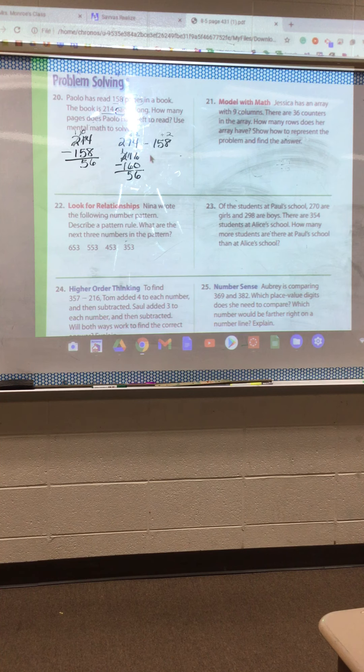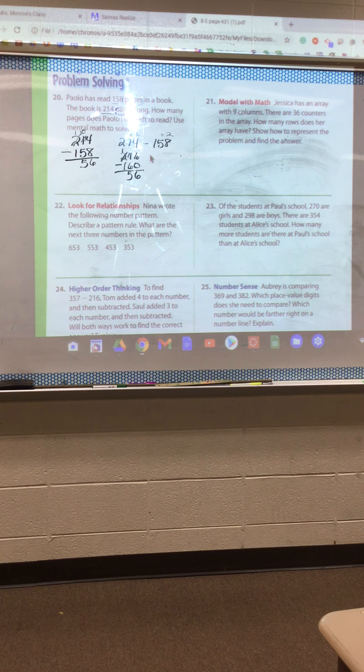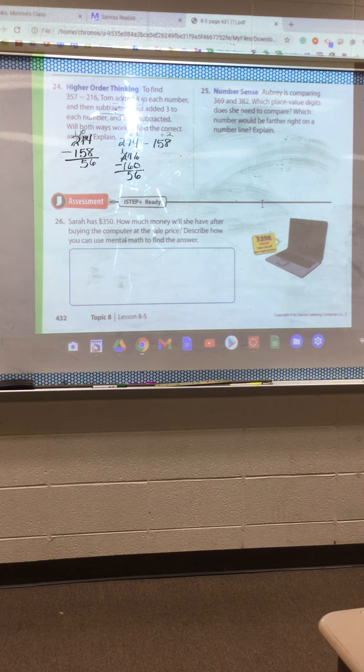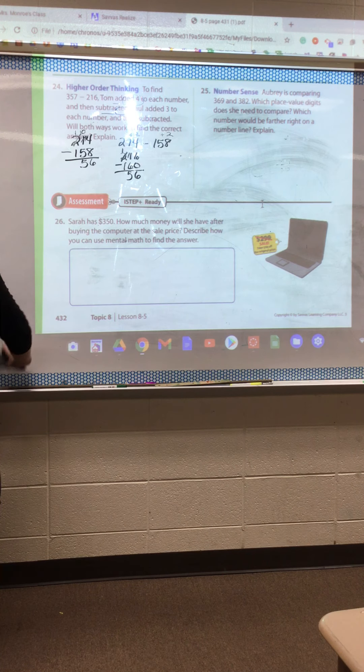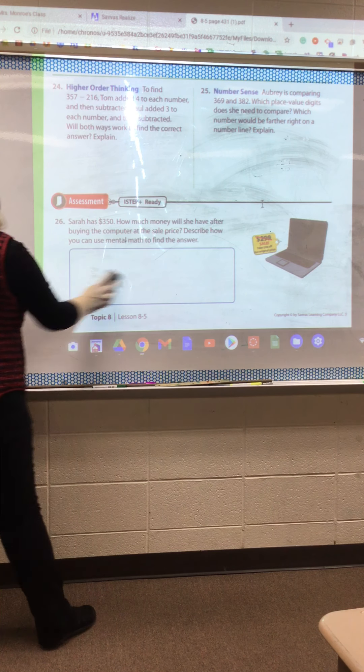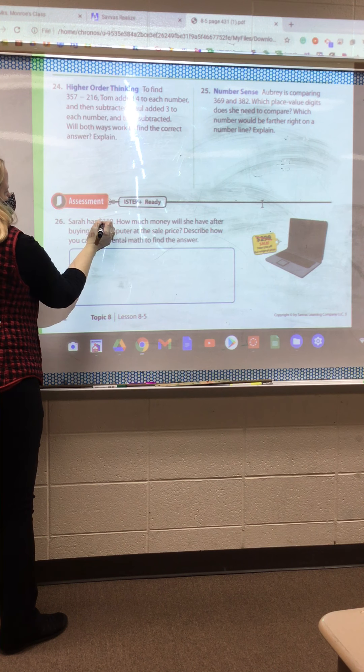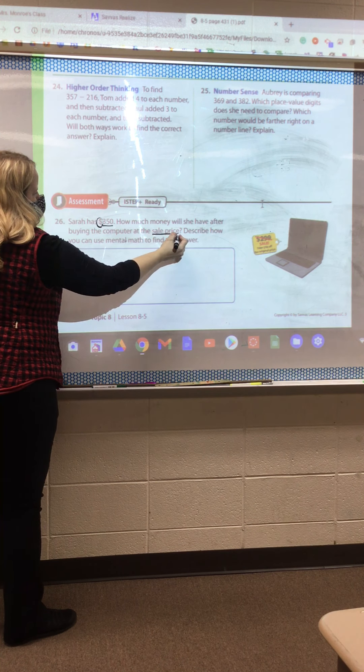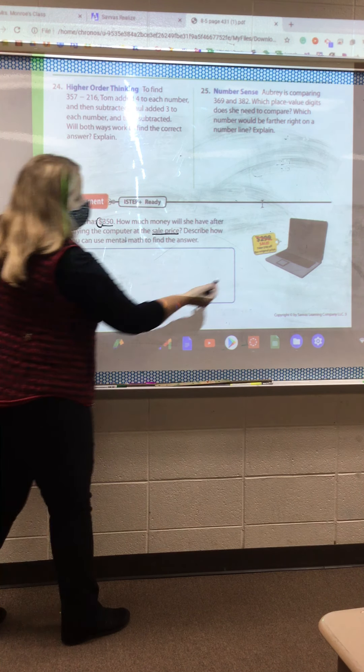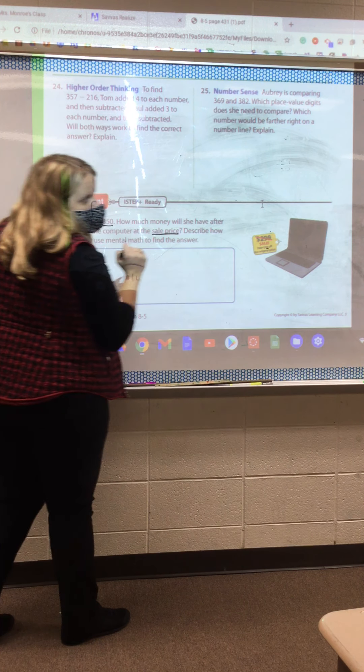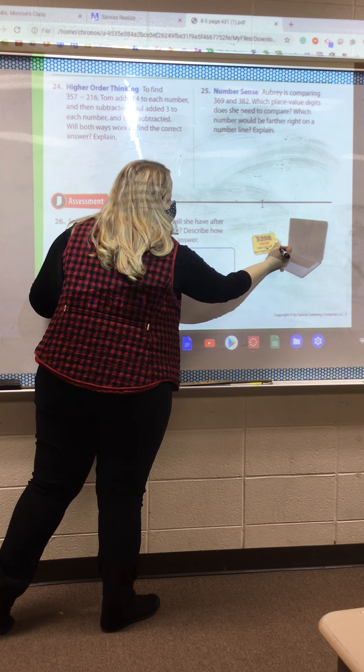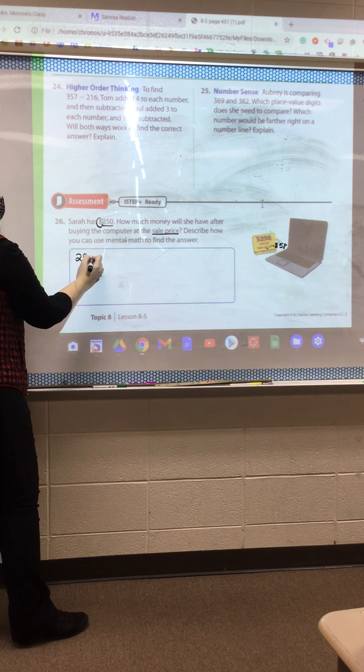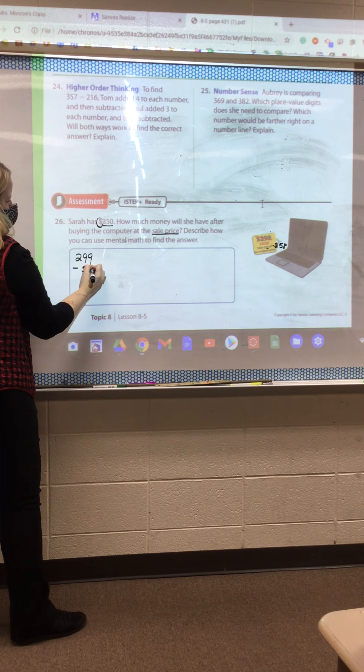We're going to scroll down to the bottom. I want to do 26, because I want you to have time for Savas and your Brain Pop today. So down here, it says, Sarah has $350. How much money will she have after buying the computer at the sale price? Describe how you can use mental math to find the answer. The original price was $299. And we have to take 58 from that.